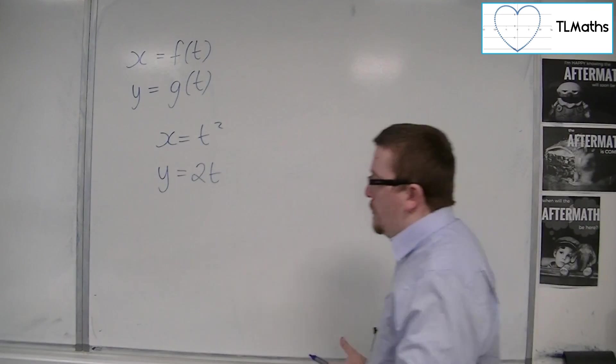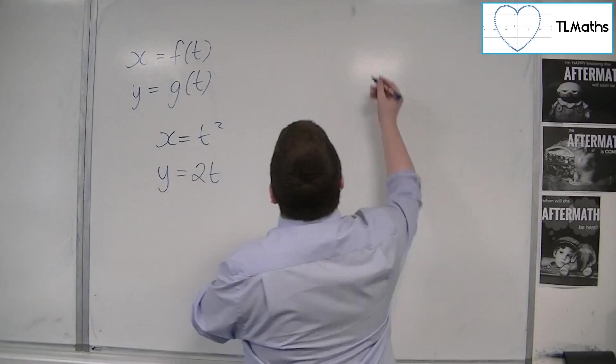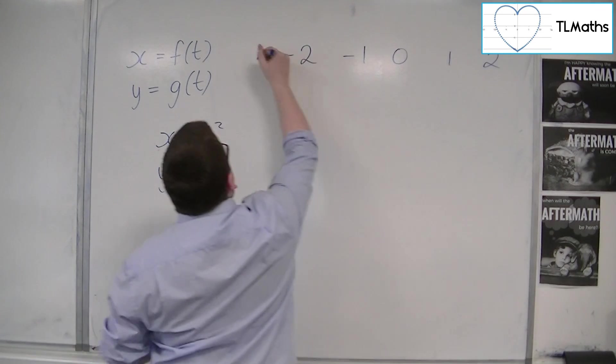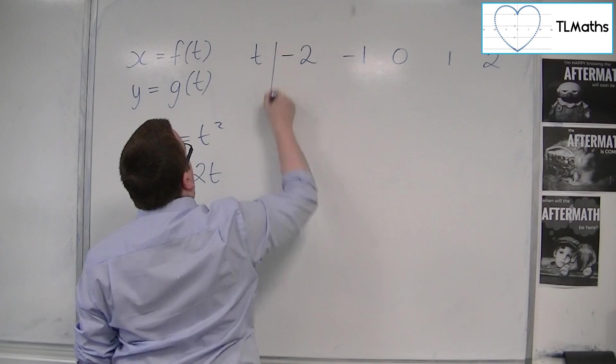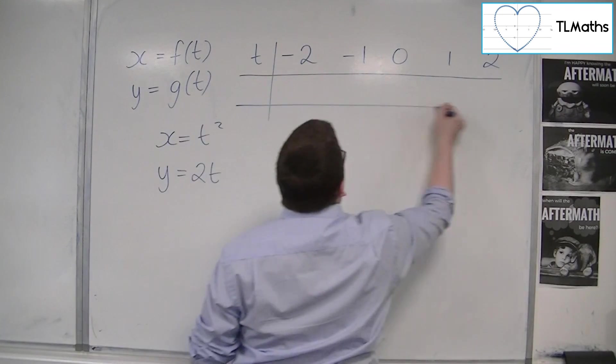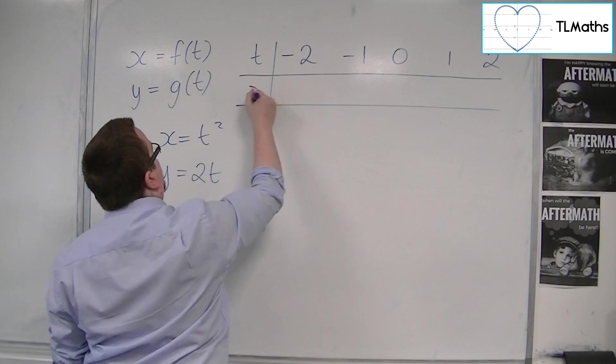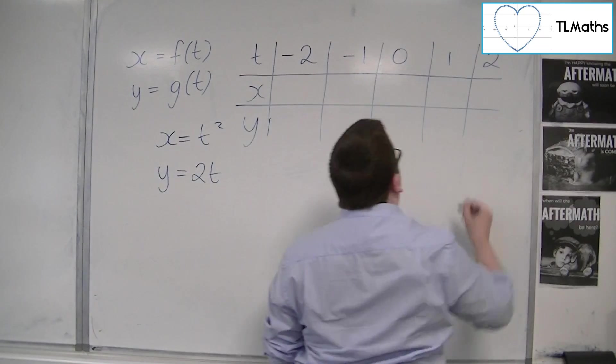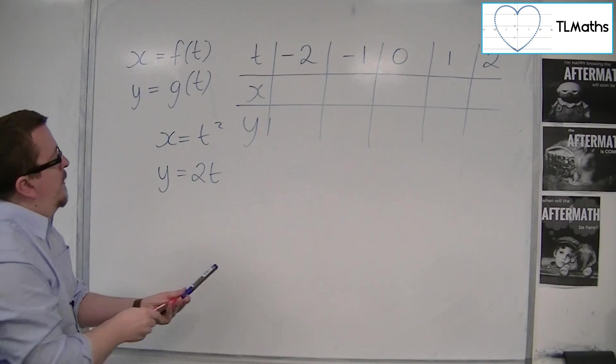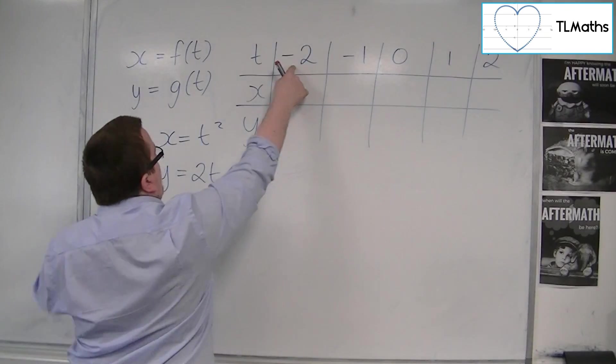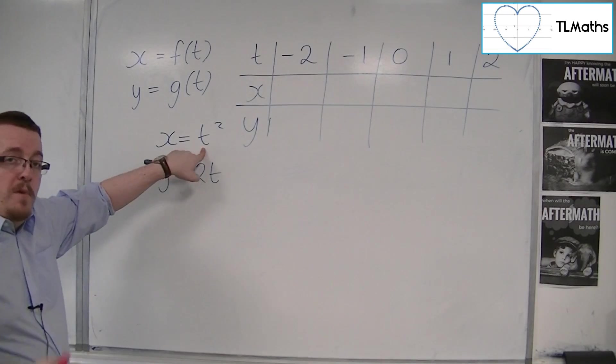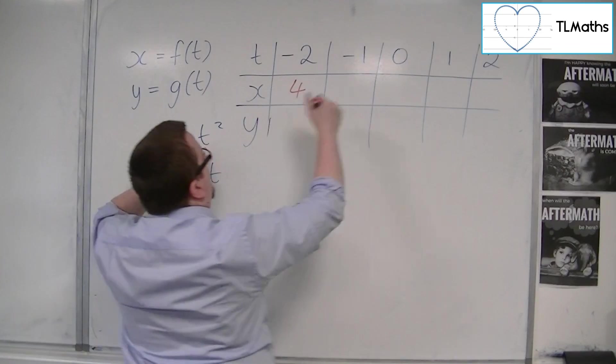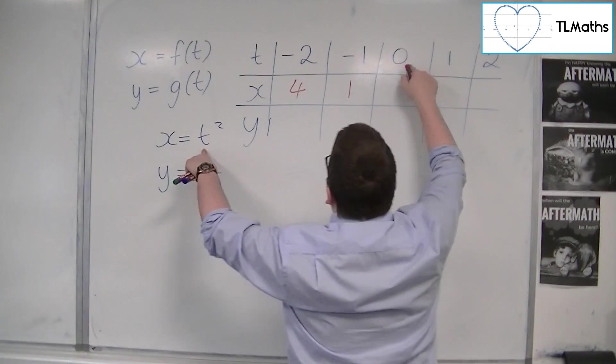And what we could then do is we could build up a table, so let's say that these are the values of t that I am going to substitute in to x and y. And for each of these t's, I am going to get a pair of coordinates. So when t is minus 2, x is equal to minus 2 squared, so 4. When t is minus 1, I'm going to get 1. When t is 0, I'll get 0. When t is 1, I'll get 1.